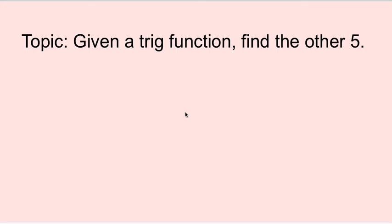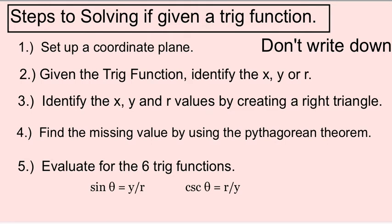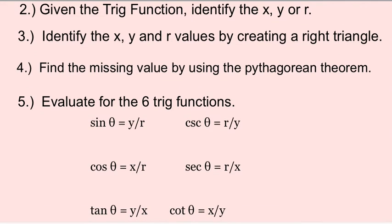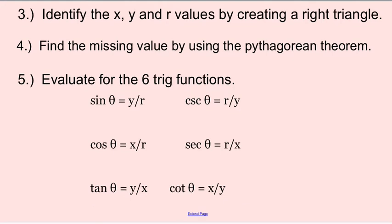Given a trig function, we want to find the other five trig functions. This first slide I don't want you to write down, I just want to talk you through it. Steps to solving if you're given a trig function: first, set up a coordinate plane. Given the trig function, identify any x's, y's, or r's that you can. Then identify the x, y, and r by creating a right triangle. Find the missing piece using the Pythagorean theorem. Then evaluate the other five trig functions using these fractions.